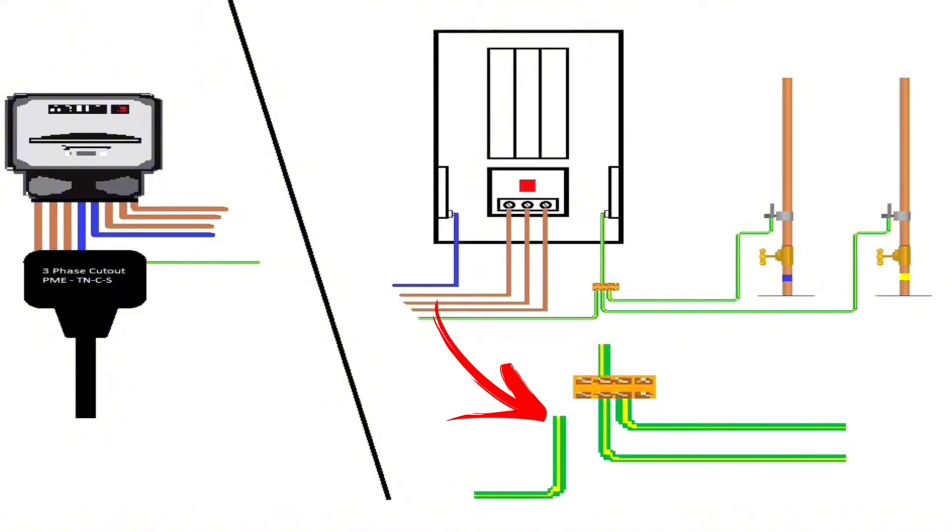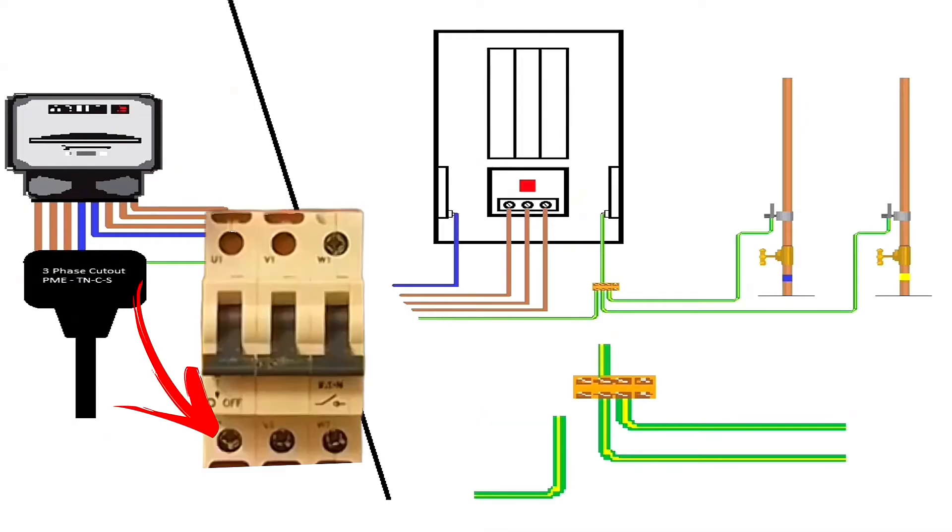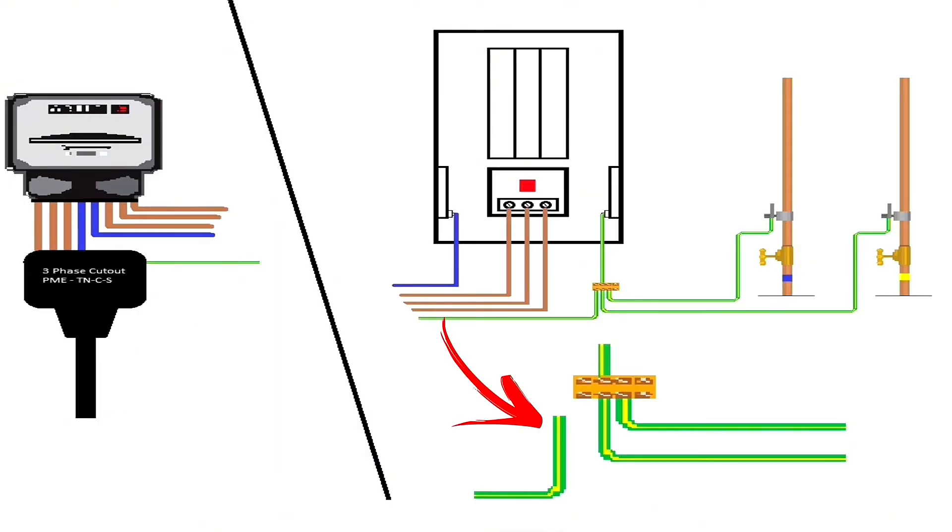Test from the disconnected earthing conductor to the board's individual lines to get our true external earth fault loop impedance. By removing it from the MET, you remove the parallel earth paths created by the metallic water, gas, structure of the building, etc.